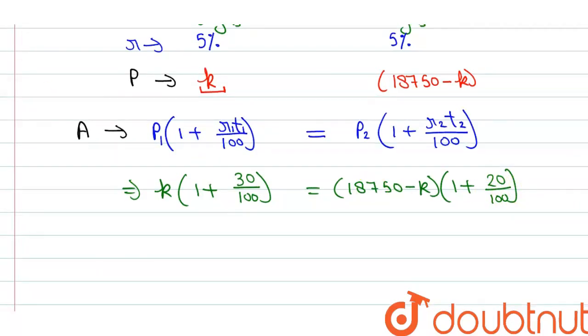Now let's solve this. So 1.3 times k equals 18,750 times 1.2. So 18,750 times 1.2 equals 22,500 minus k times 1.2, which is 1.2 times k.